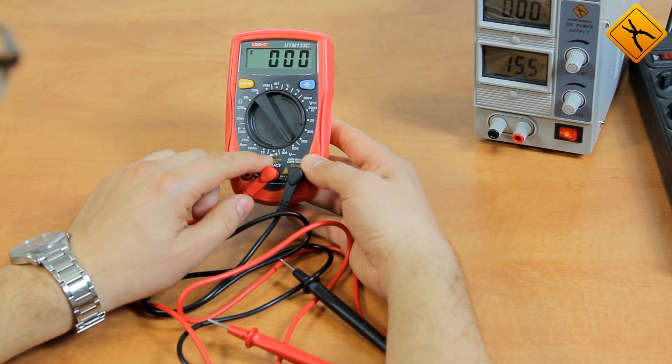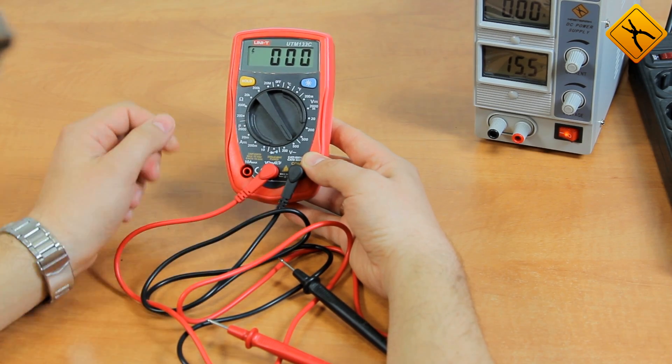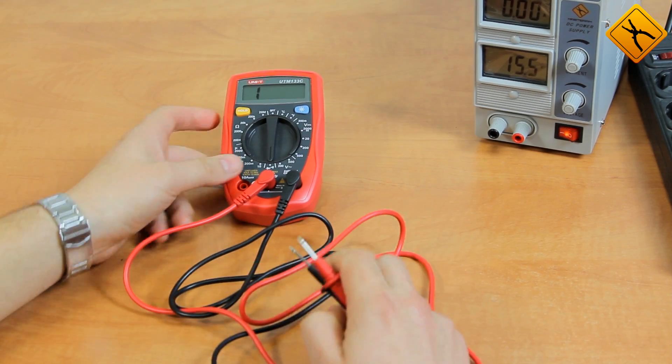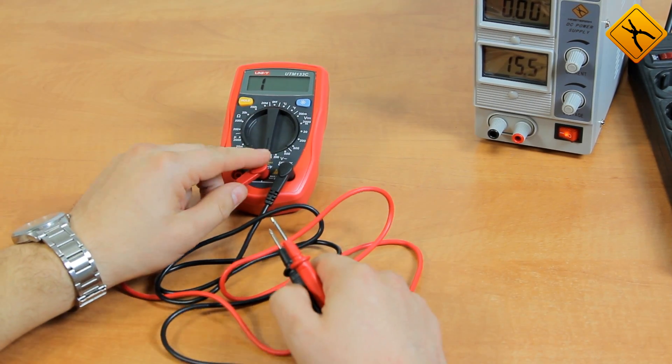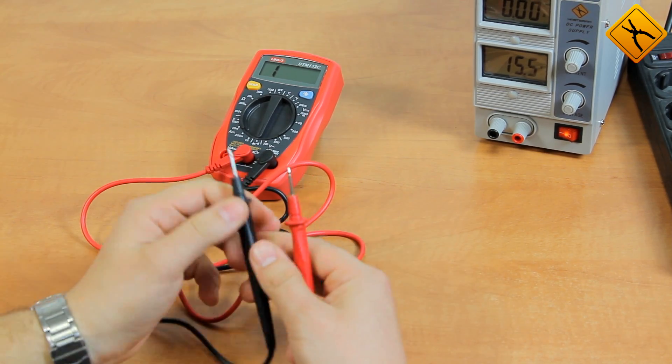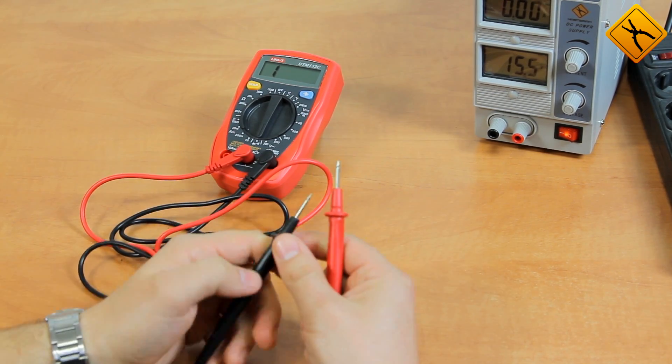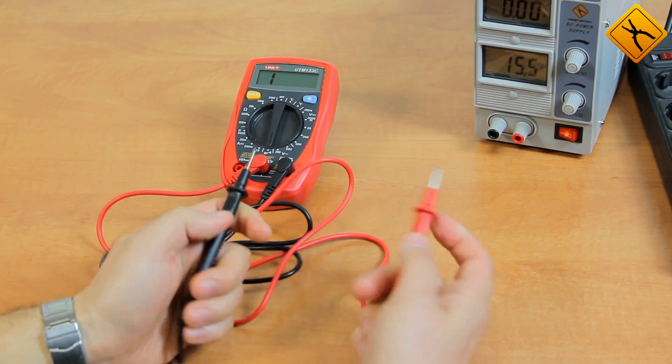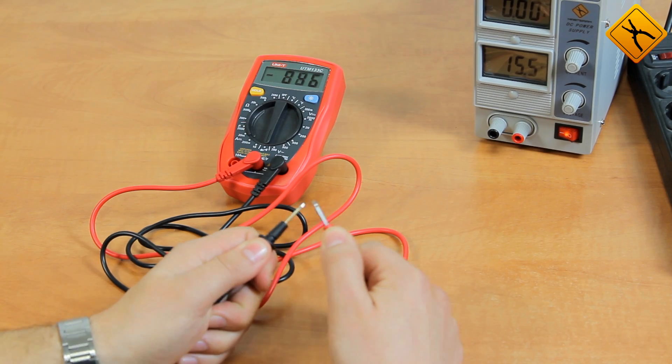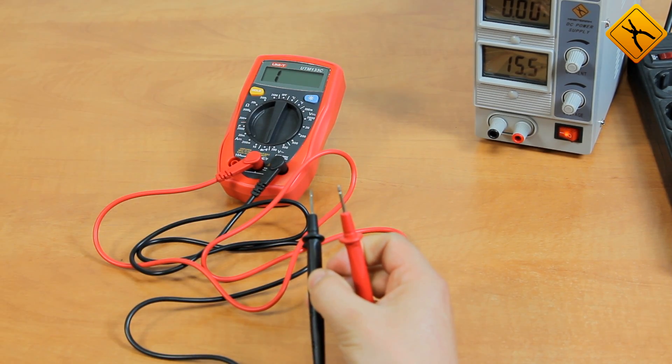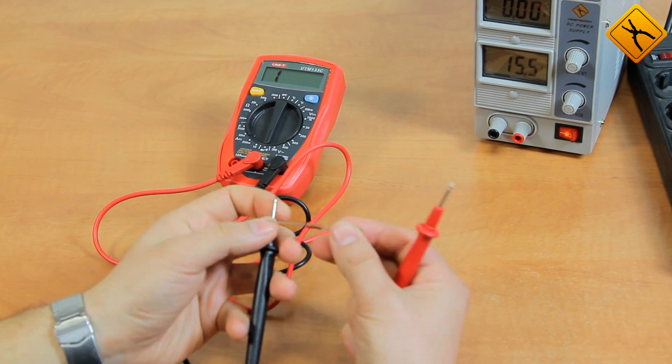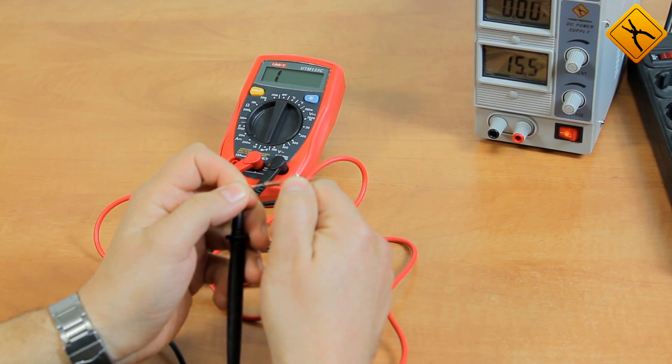We also have a continuity test and diode test. I start with the continuity test. So what is that? In this mode, if the resistance between the probes is less than 70 ohm, you can hear the continuity buzzer sound. I cross the probes and you may hear the sound, as the resistance is close to zero. I take the resistor having resistance more than 70 ohm. I connect it and nothing happens.